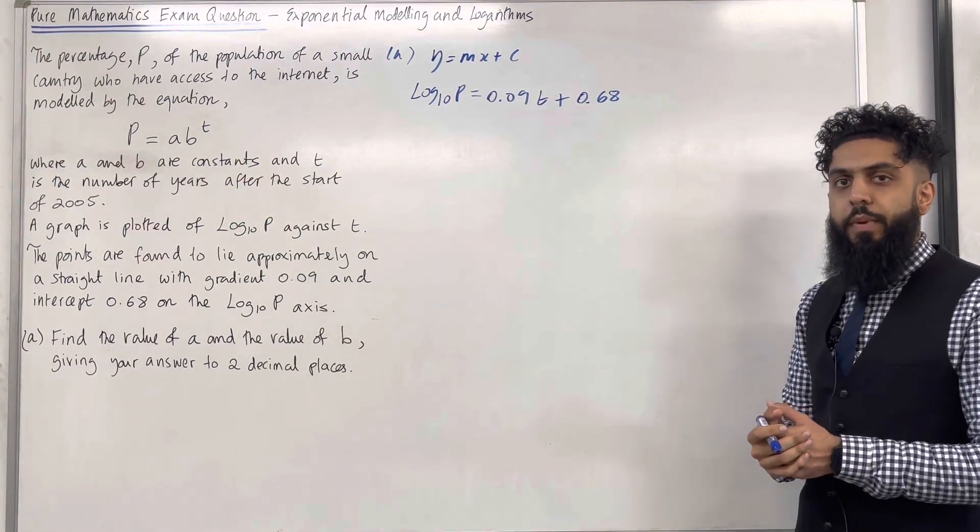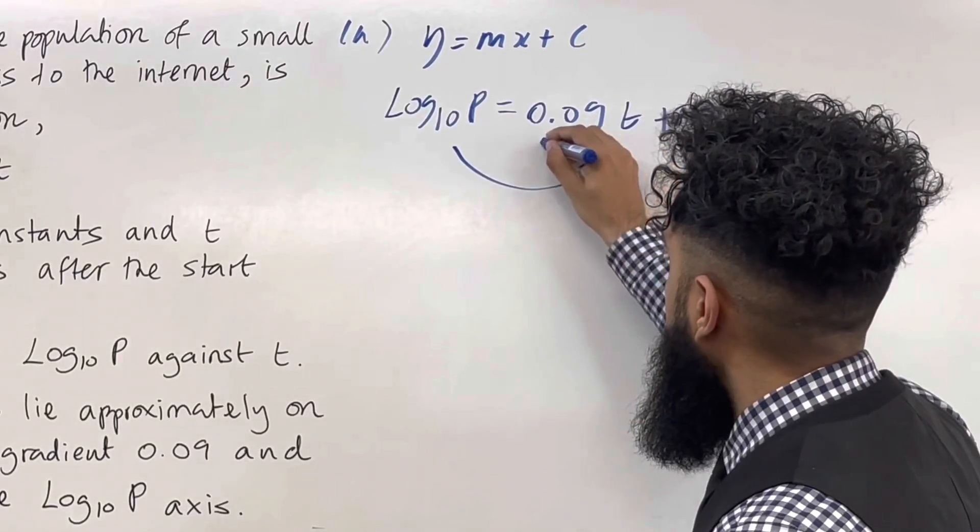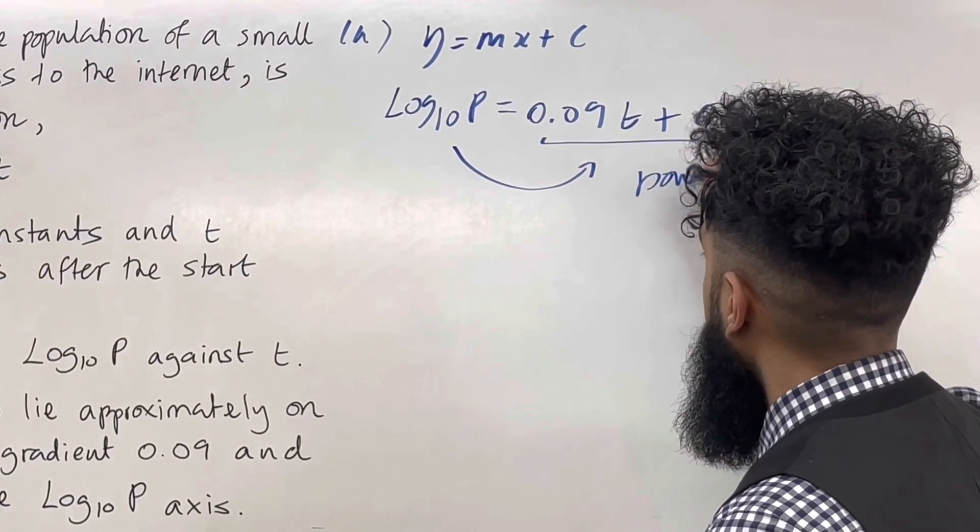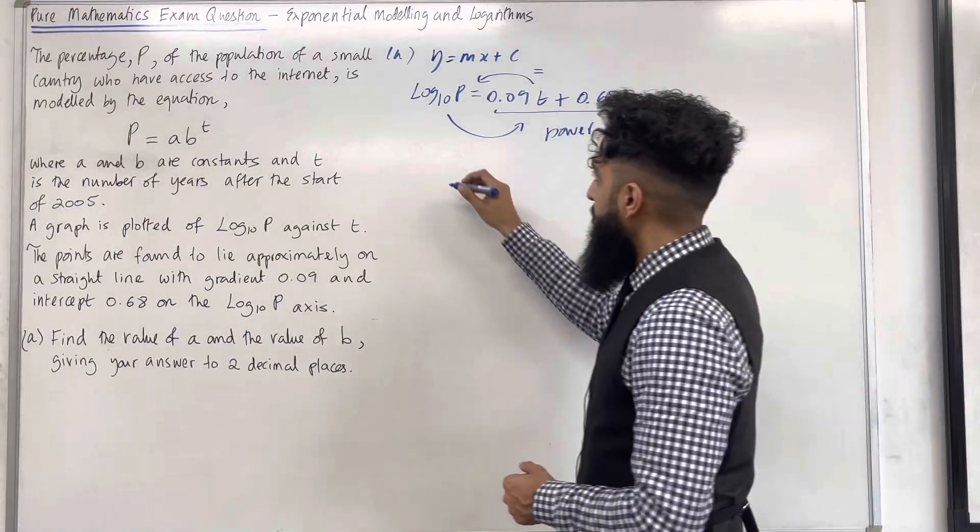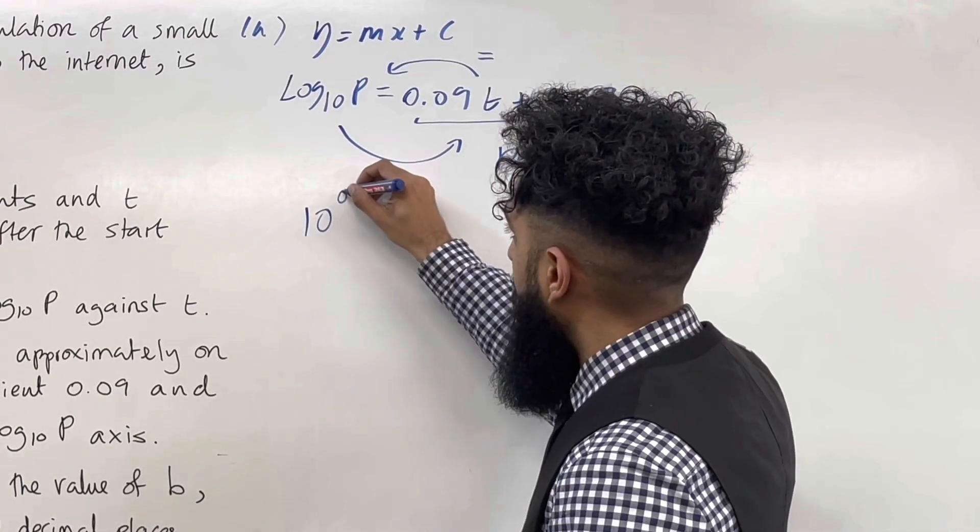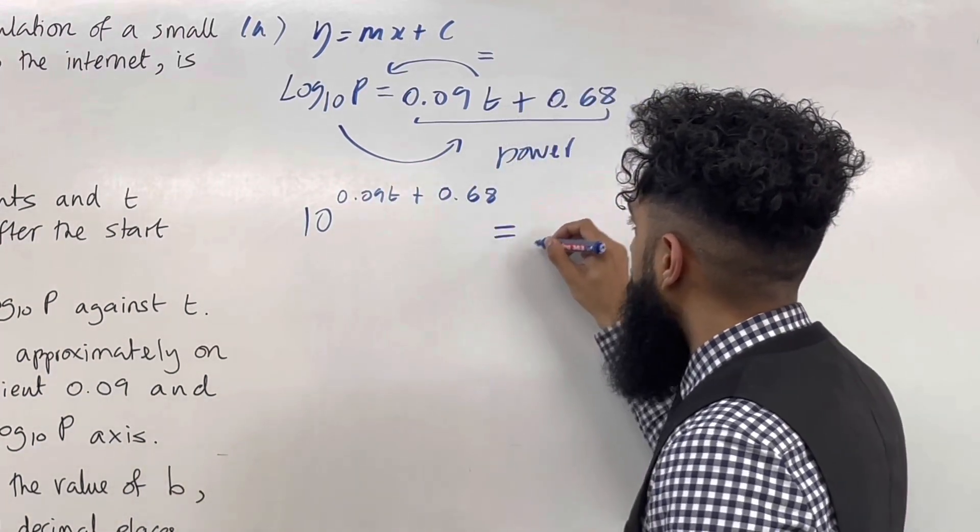Now my target is to rearrange this particular equation in this form over here in order to read off the A and B to two decimal places. So I've got base 10 in the logarithm, I can raise it to this power and I can set it equal to what I have inside the logarithm.